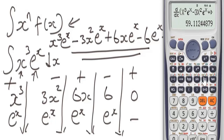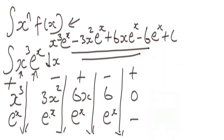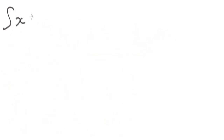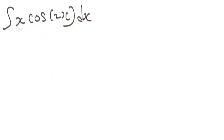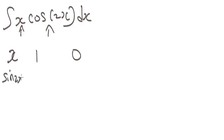Now let's solve another problem involving a trigonometric function. What if you're given this integral: x·cos(2x) dx? The first thing to do is differentiate the polynomial and integrate the trigonometric function. Differentiating x gives 1, and differentiating 1 gives 0. Integrating cos(2x) gives sin(2x)/2.